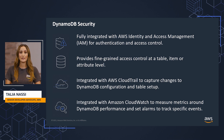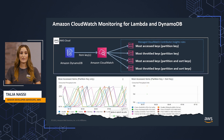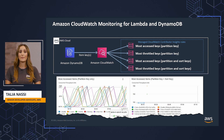DynamoDB is also integrated with Amazon CloudWatch and AWS CloudTrail to capture changes to configurations, measure metrics around DynamoDB performance, and set alarms to track specific events. You can also monitor your Lambda function and DynamoDB applications using CloudWatch, which collects and processes raw data into readable, near-real-time metrics. These statistics are retained for a period of time so that you can access historical information for a better perspective on how your web application or service is performing. By default, DynamoDB and Lambda metric data is sent to CloudWatch automatically.